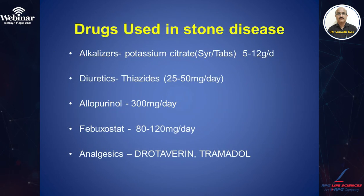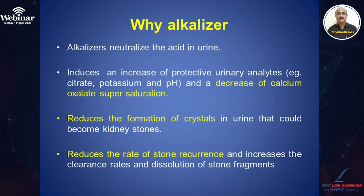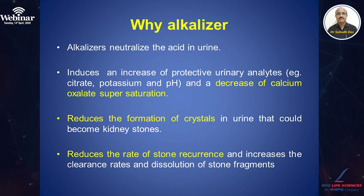What drugs are used for medical treatment? Since acidic environment promotes stone formation, urinary alkalizers are among the most common agents used. This includes potassium citrate, given as syrup or tablet at a dose of 5 to 12 grams per day. Diuretics in the form of thiazides, allopurinol at 300 mg per day, and febuxostat at 80 to 120 mg per day, along with analgesics and antispasmodics like drotaverine and tramadol for symptomatic relief. Alkalizers neutralize urine, increase protective urinary analytes like citrate, potassium, and pH, decrease calcium oxalate supersaturation, and reduce the rate of stone recurrence while increasing clearance rates.